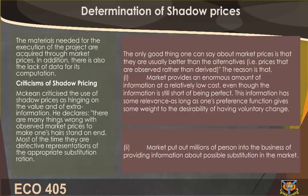Criticisms of Shadow Pricing. Makin criticized the use of shadow prices as hinging on the value of extra information. He declares there are many things wrong with observed market prices — most of the time they are defective representations of the appropriate substitution ratio. The only good thing about market prices is that they are usually better than alternatives, since one market provides an enormous amount of information at relatively low cost, even if imperfect.